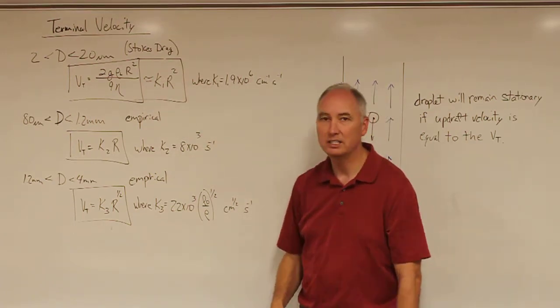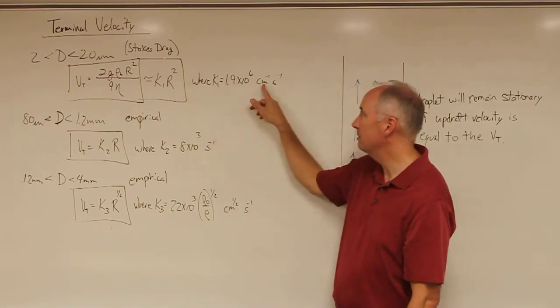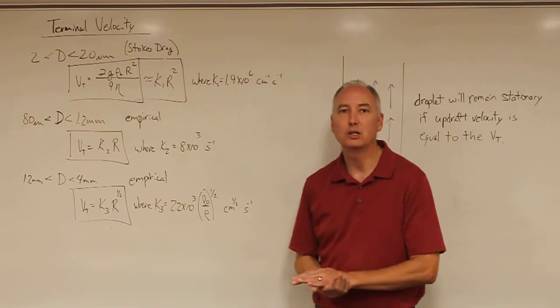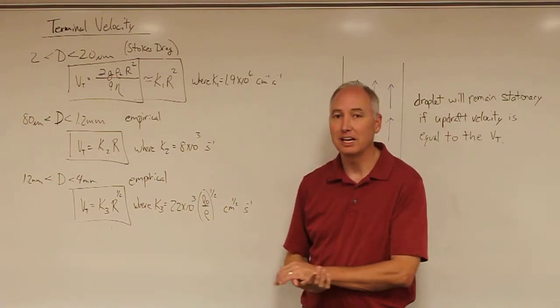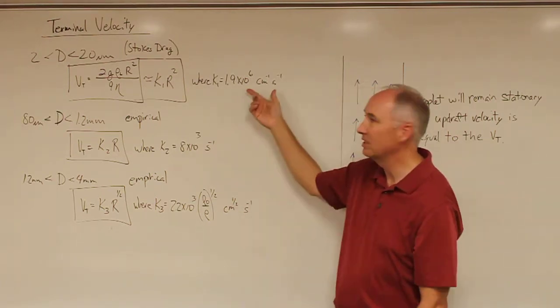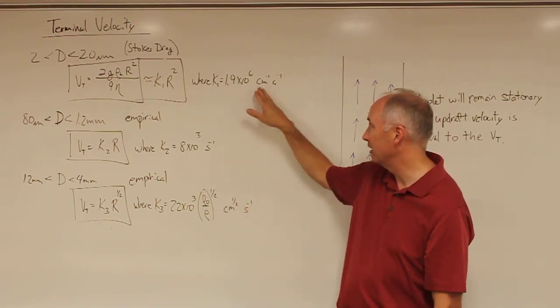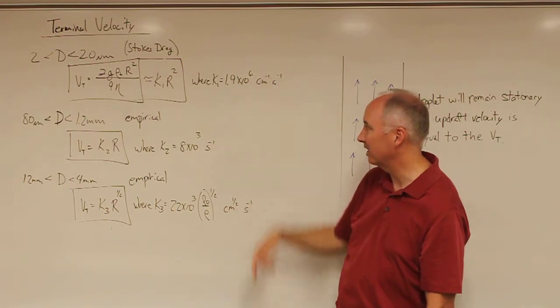That constant is about 1.9 times 10 to the sixth centimeters to the minus one seconds to the minus one. You're going to be quickly annoyed with the fact that in cloud microphysics, the units get very strange and are often done in non-SI units. In this case, we're using per centimeter per second.